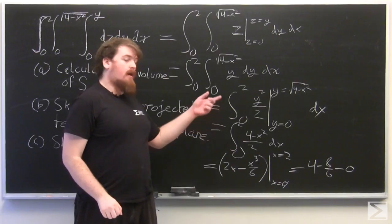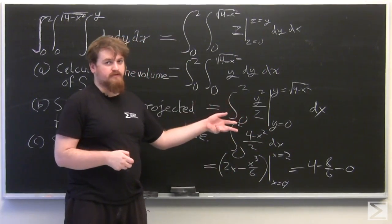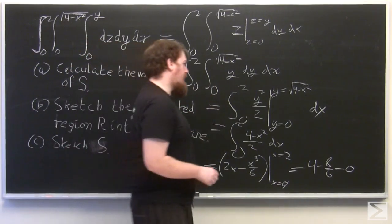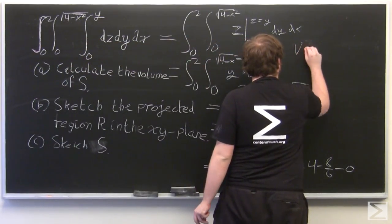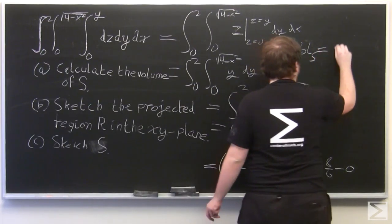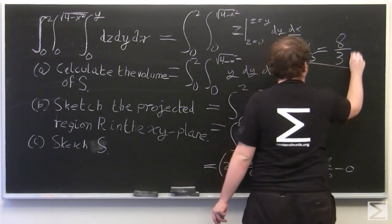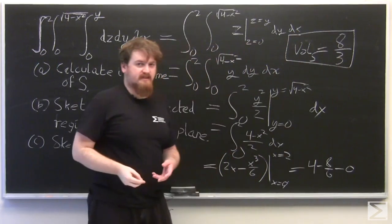And so that becomes 4 thirds and 4 is 12 thirds. So in total, we have that the volume of S is 8 thirds.